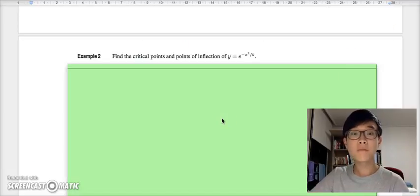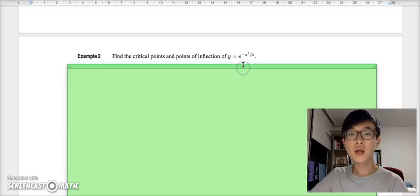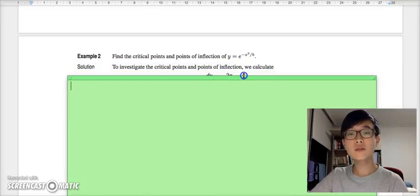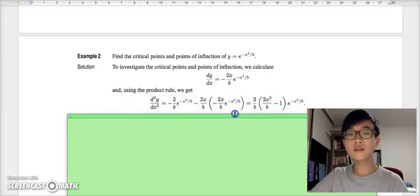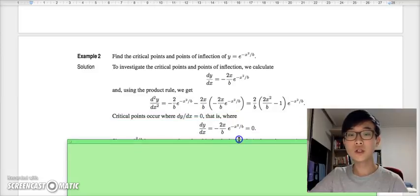Let's take a look at example number two. Find the critical points and points of inflection of y = e^(-x^2/b). In order to find either the critical points or the points of inflection, we first have to derive this function. Using the product rule, you may also find a second derivative.